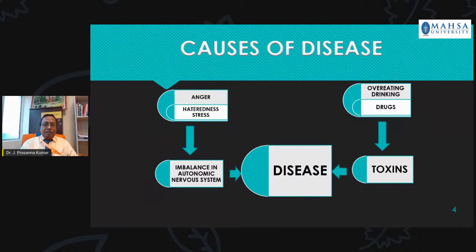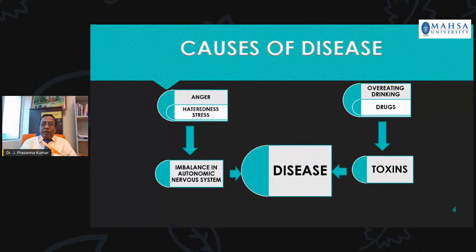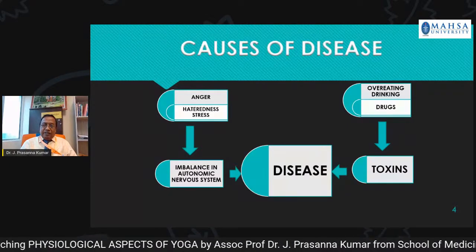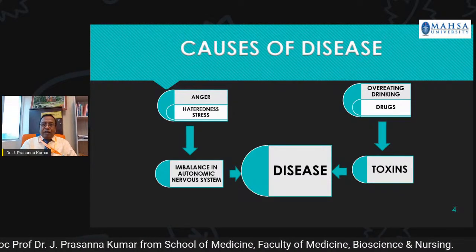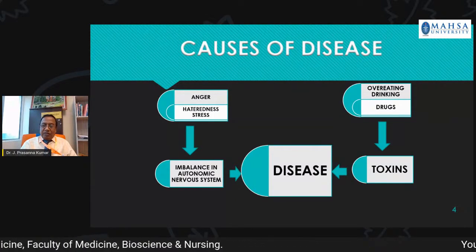Psychologically, anger, hatred, stress, greed, and all these things cause imbalance in the autonomic nervous system. On the other side, overeating, over drinking, taking drugs and all these things lead to the release of toxins, which again causes disease. That means psychological imbalances on one side and physical imbalances on the other side — these two things cause disease.